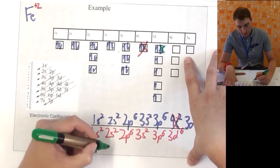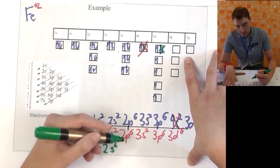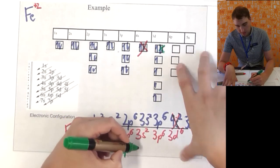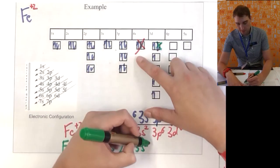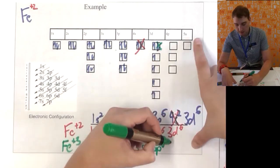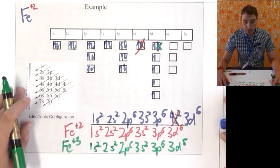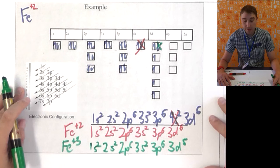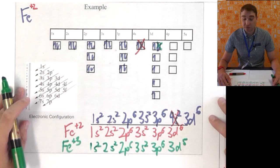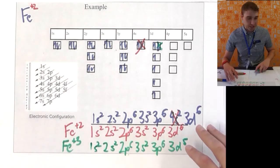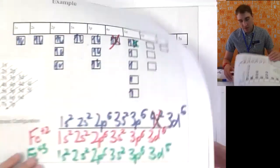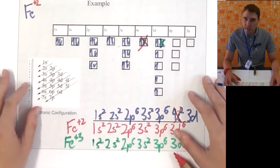To make the Fe plus 3 ion, we've got 1s2, 2s2, 2p6, 3s2, 3p6, and this time 3d5. So, there's two stable ions here for figuring out iron ions. Again, that gets confusing, doesn't it?